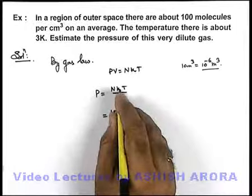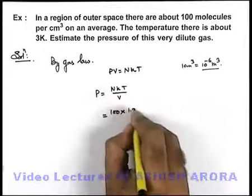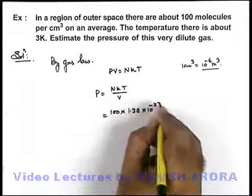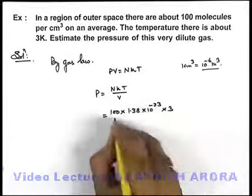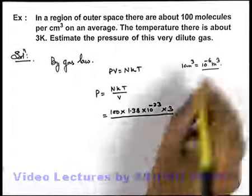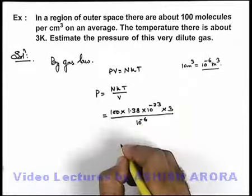Multiplied by Boltzmann constant, we can write as 1.38 × 10^-23. Temperature, it is already given to be 3 Kelvin, divided by volume we take as 10^-6 meter cube.